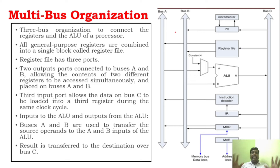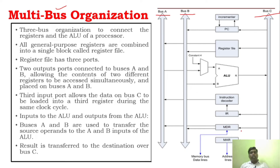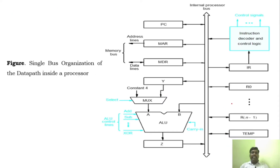Multi-bus organization is a theoretical question — you explain the diagram, compare single bus and multi-bus architecture. From the name, multi-bus organization has three buses: Bus A, Bus B, and Bus C — it can be called three-bus organization. As usual, you will have program counter, registers, instruction register, instruction decoder, IR, MDR, MAR, and all those components.